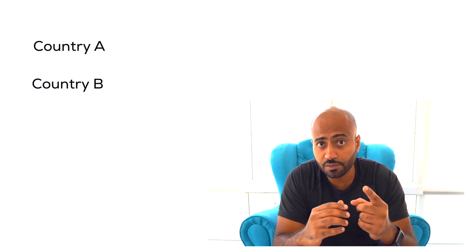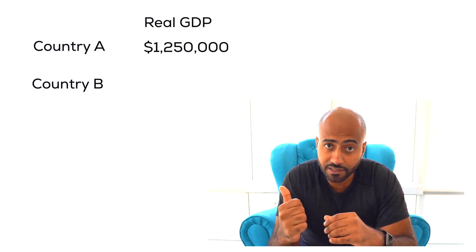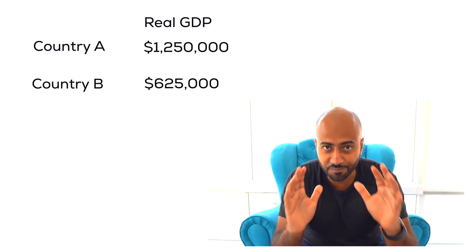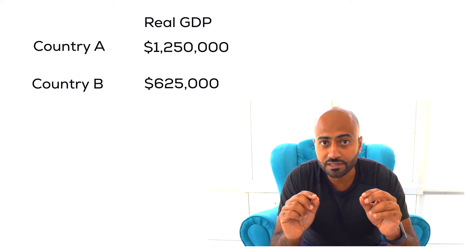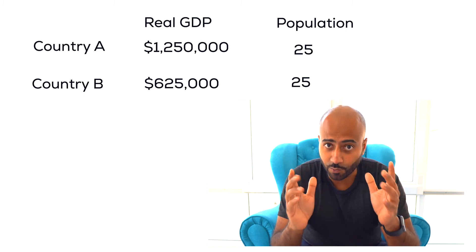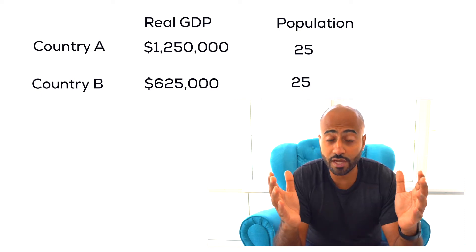Let's look at a hypothetical example. We have two countries: Country A and Country B. In Country A, real GDP is $1,250,000. In Country B, real GDP is $625,000. Both countries have 25 people living in each of them. What you're probably already doing is calculating real GDP per person, so go ahead and do that.